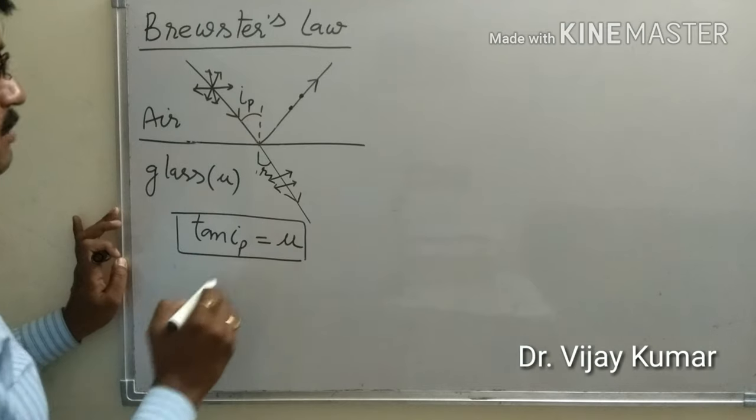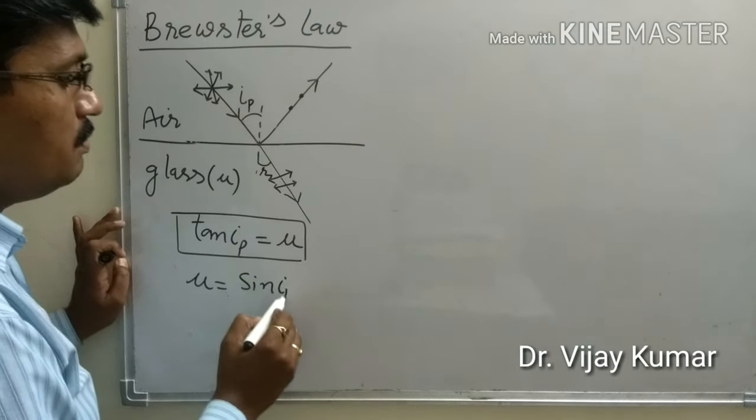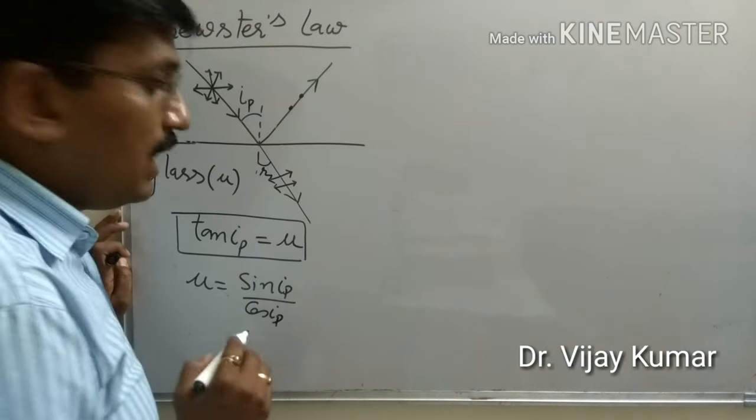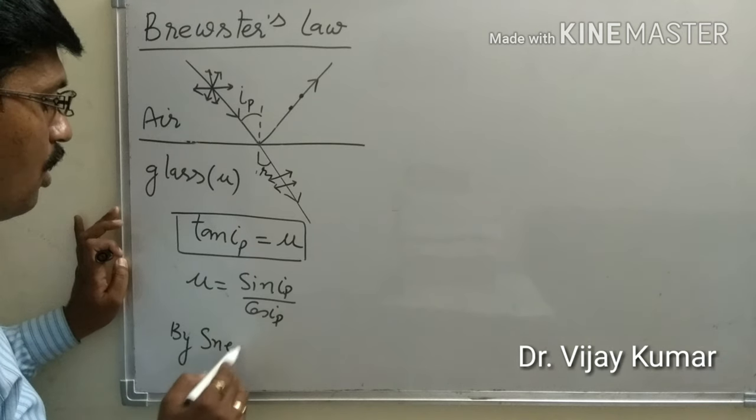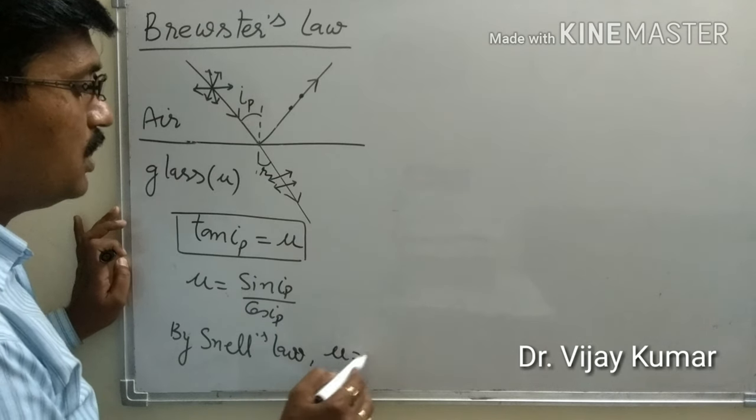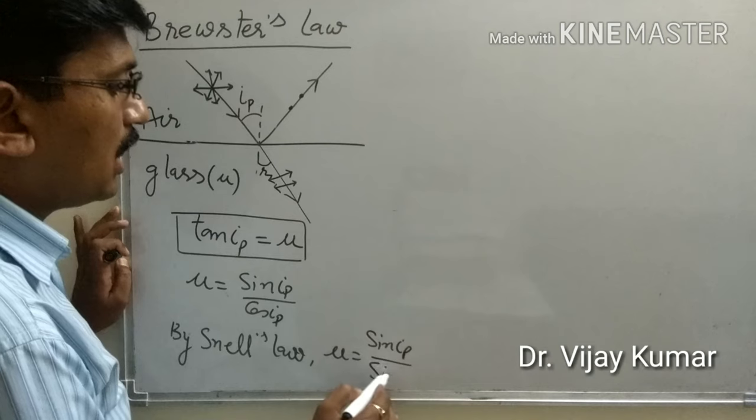It means we can write it sin ip upon cos ip and by Snell's law we can write mu equal to sin ip upon sin r.